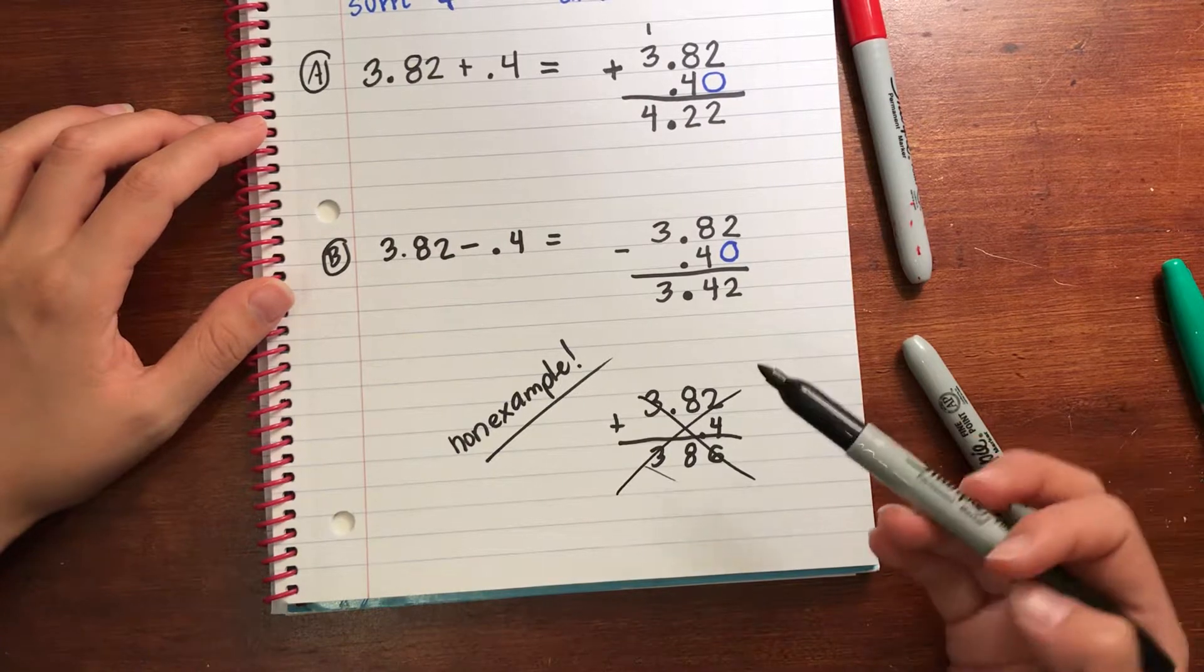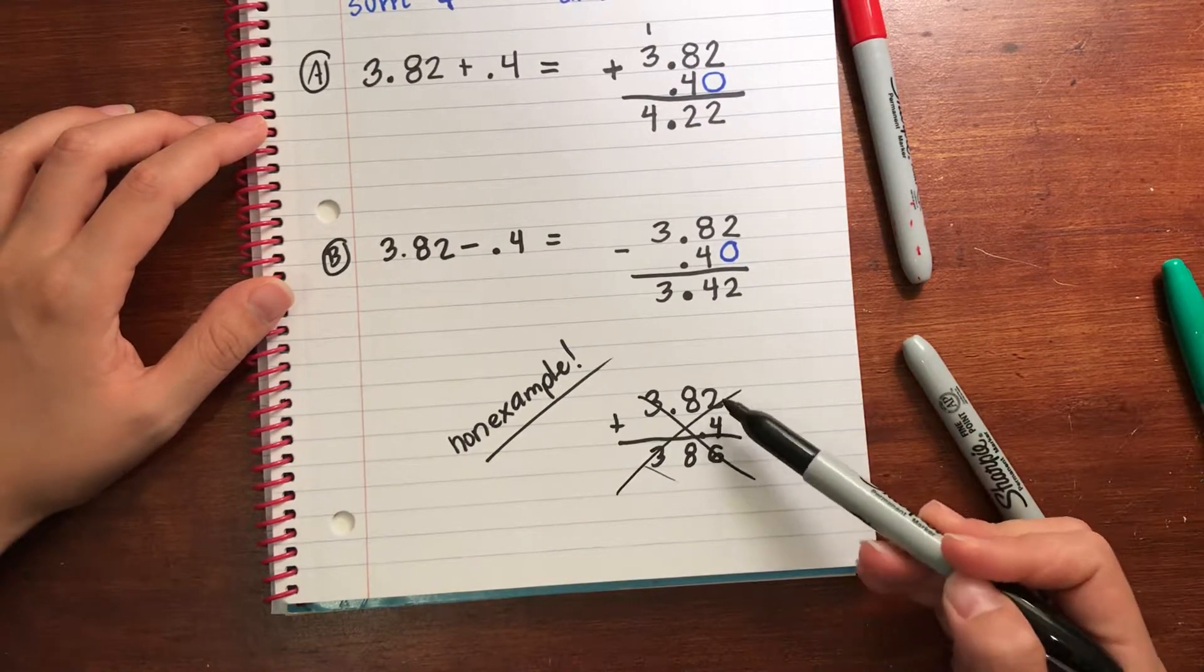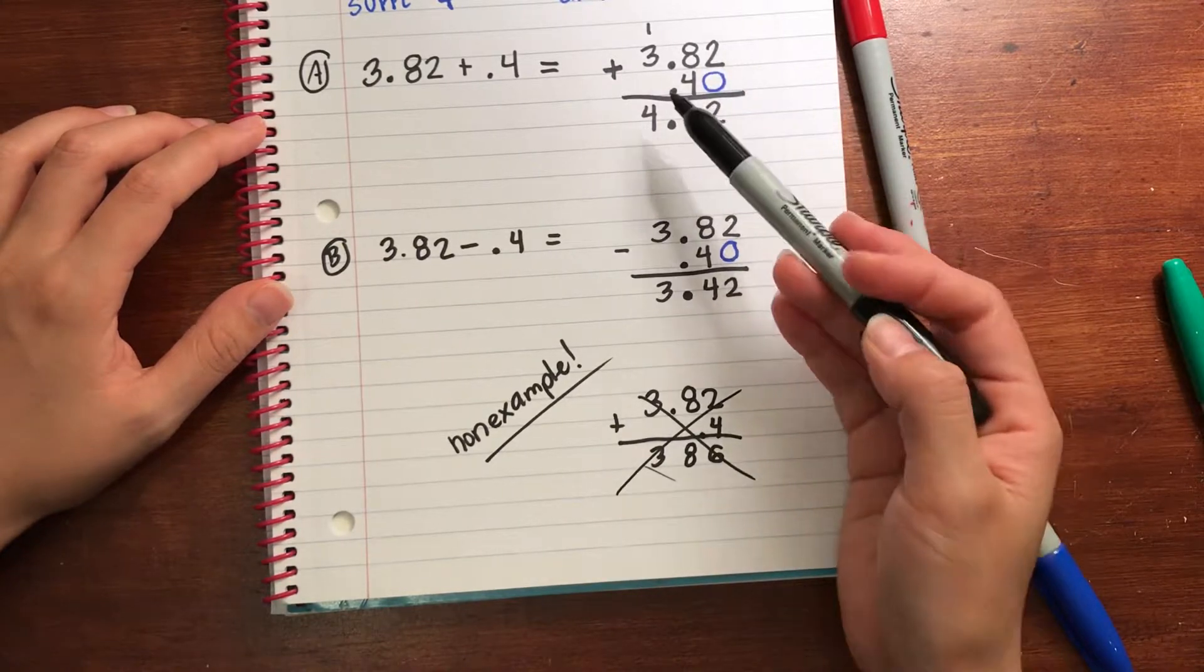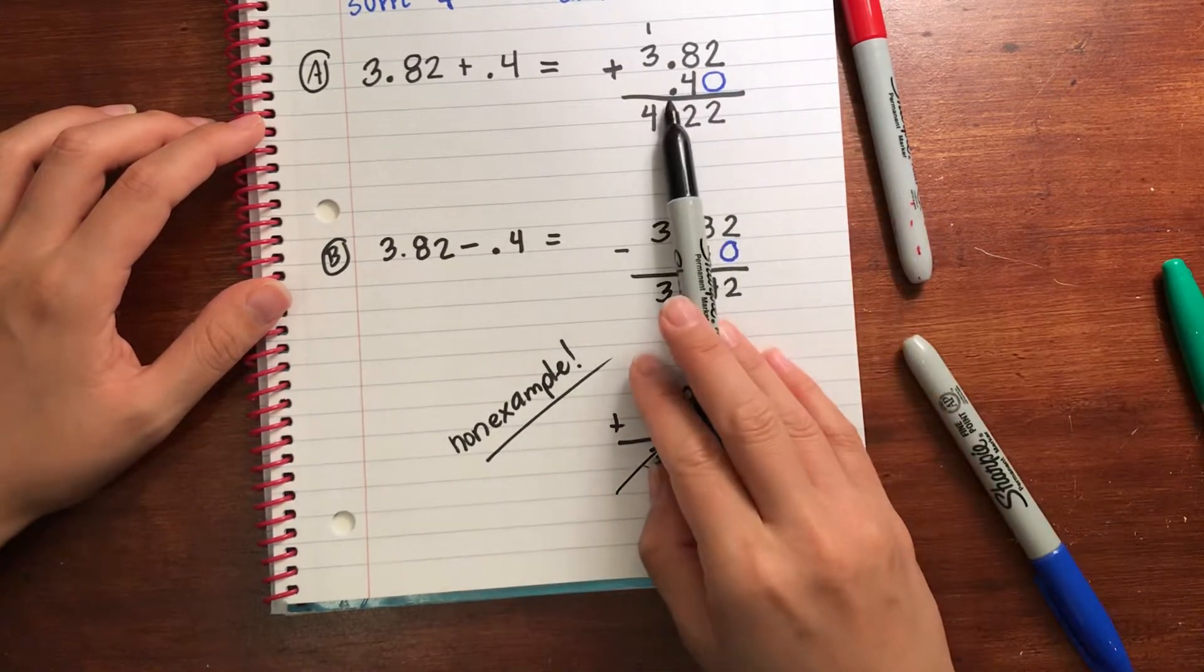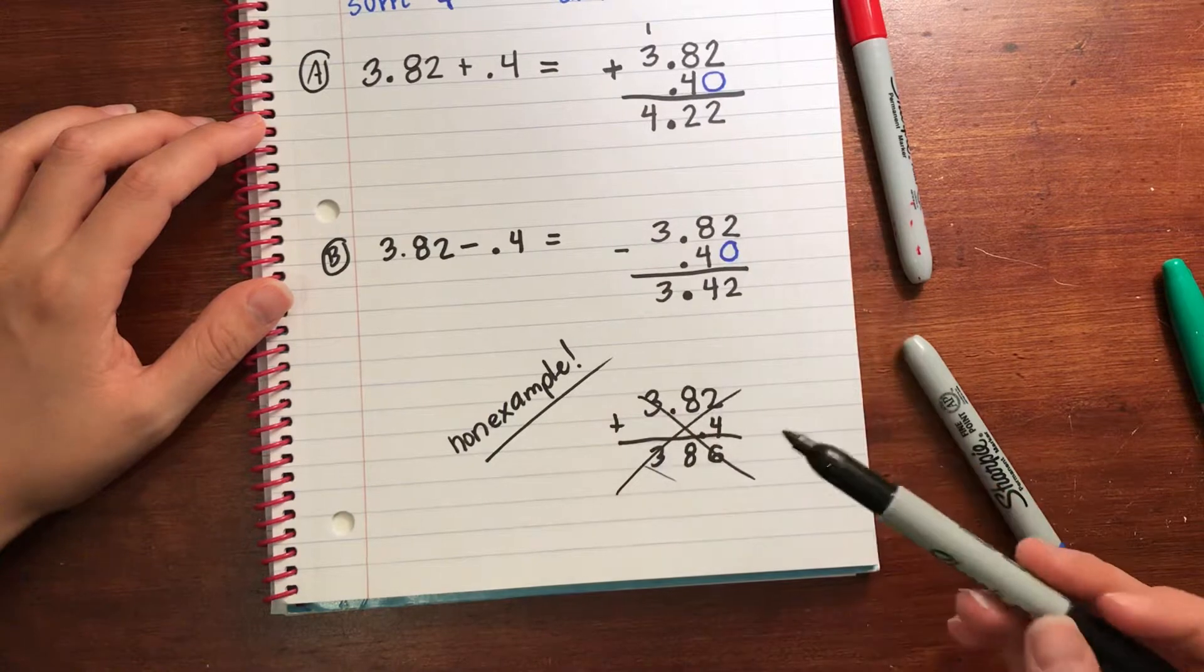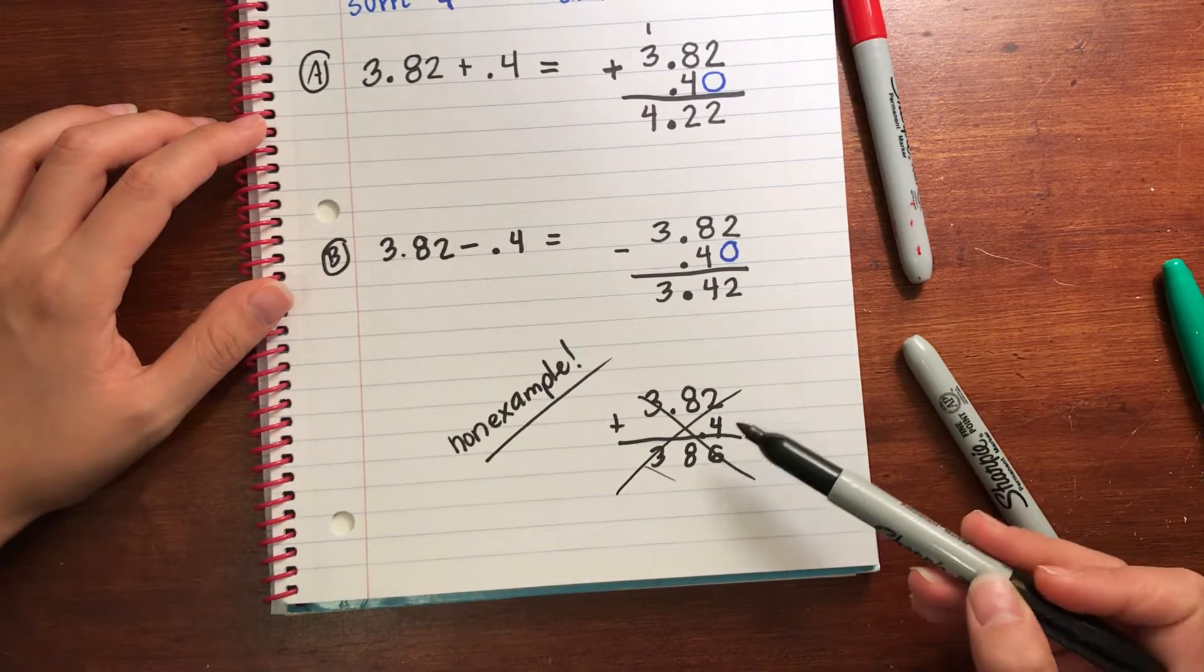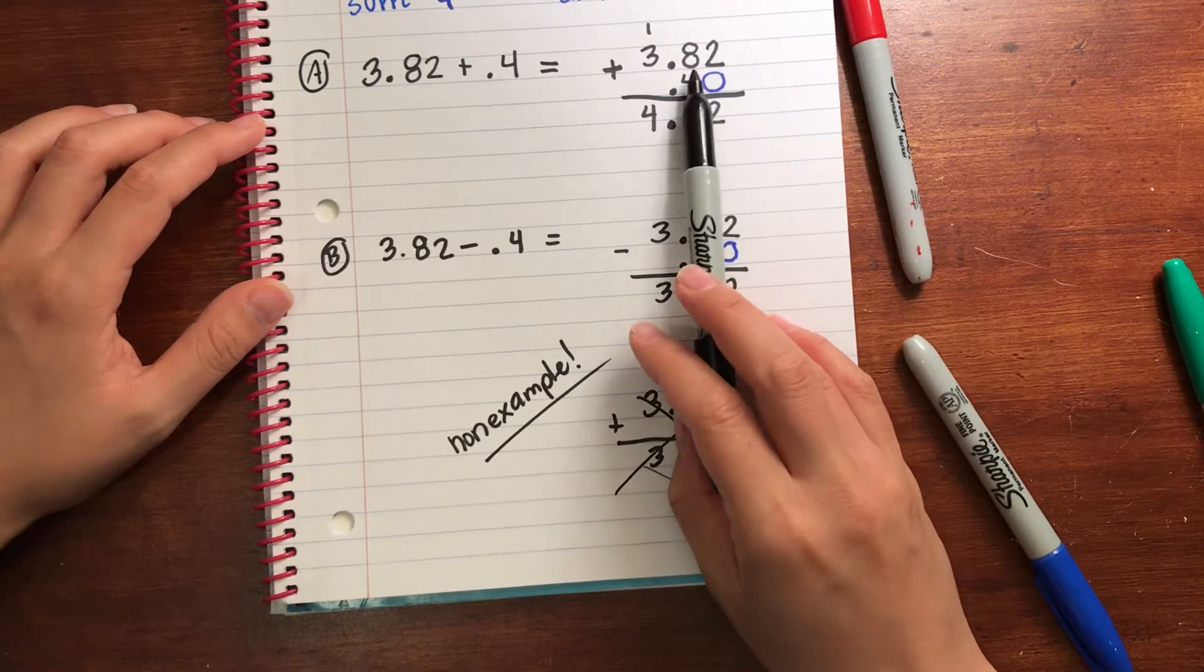When you're adding and subtracting decimals, never line up the digits. Line up the decimals, then the digits will follow through because when you line up the decimals you're lining up the place value. Here you added two hundredths to four tenths, which is incorrect. You have to add each place value.